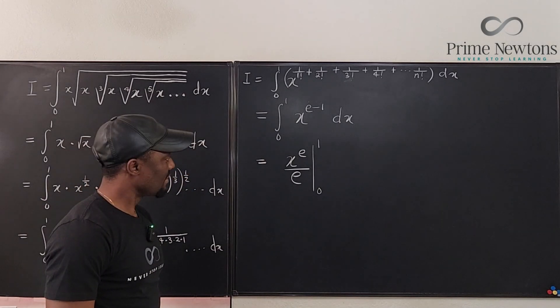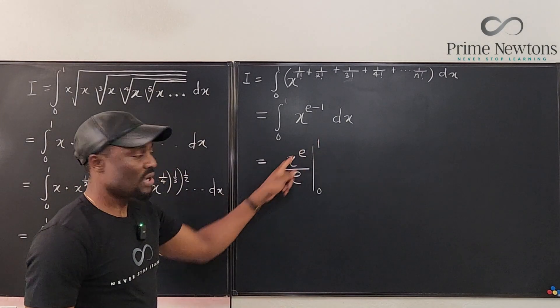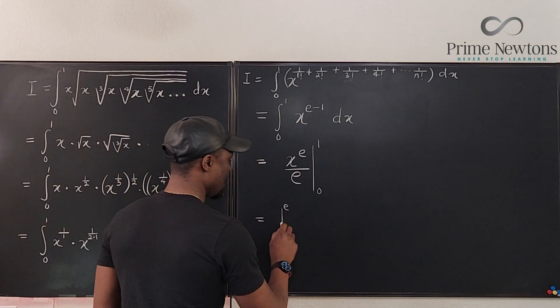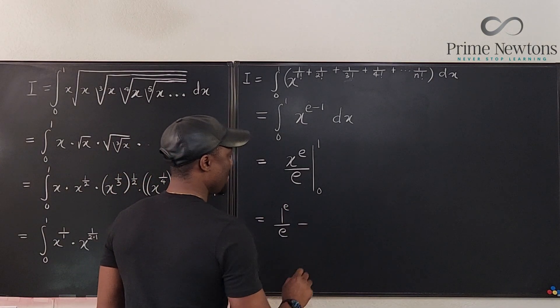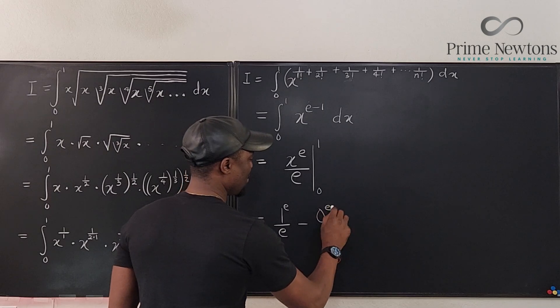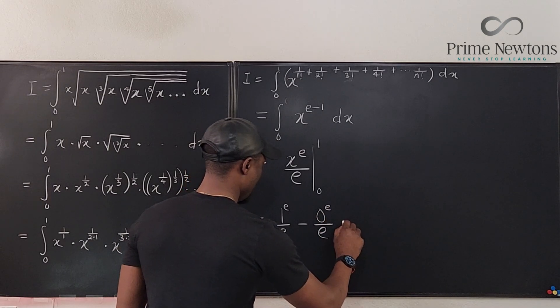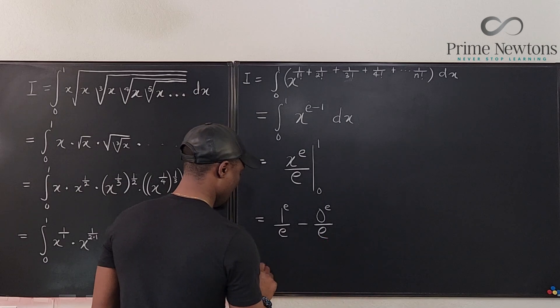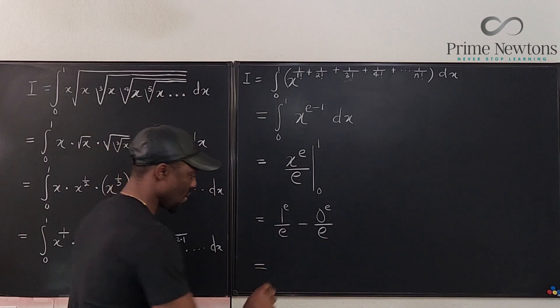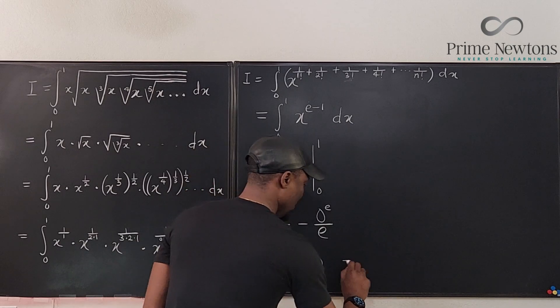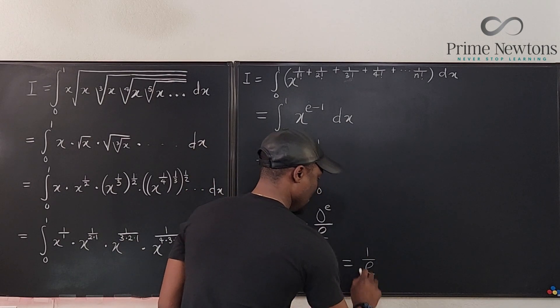So if we plug in one, we're going to end up with one raised to power e over e minus zero raised to power e over e. Well, that answer is going to be equal to one over e minus zero, which is one over e.